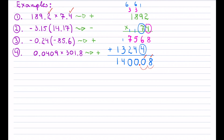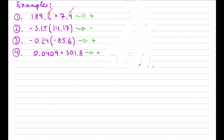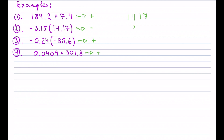Let's now take a look at example number two. In the second example, the order of multiplication is irrelevant. I'll drop the decimals altogether — I already know the answer is negative. I've fallen into the habit of putting the number with more digits on top and the number with fewer digits on the bottom.